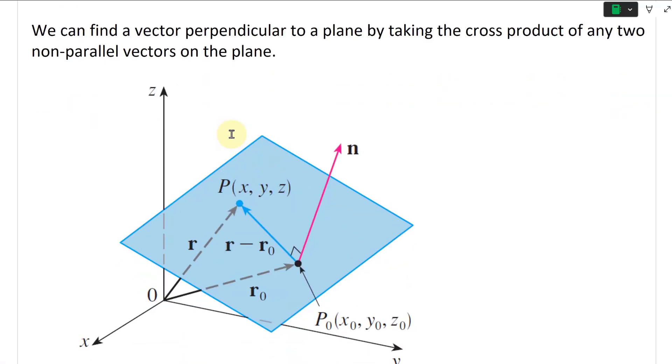So in other words, all we need is, for example, you have a point on the plane like here, P(x, y, z), and then this other point, P₀, like that.